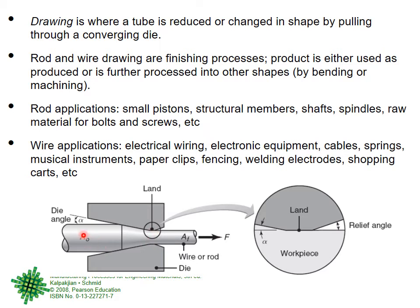The die geometry diagram is shown once again: the die angle alpha is there just as in extrusion; the initial cross-sectional area A₀ and the final cross-sectional area Af are indicated. Where the material works directly against the die is called the die land. There is an entrance cone angle alpha, and a relief angle at the exit so the workpiece does not contact the die there. At the die land, the workpiece and the die are in direct contact.